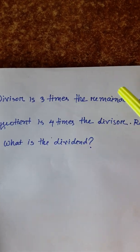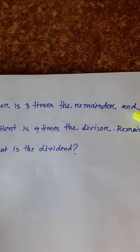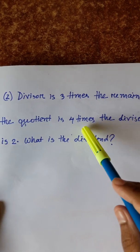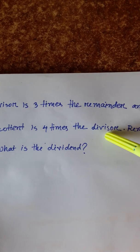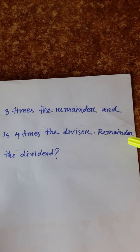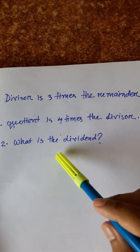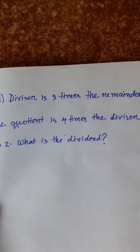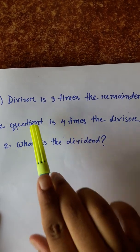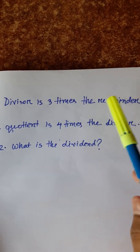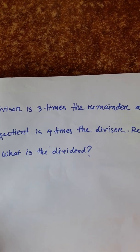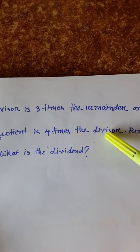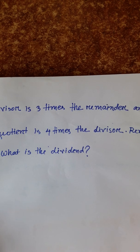Next question: Divisor is 3 times the remainder and the quotient is 4 times the divisor. Remainder is 2, then what is the dividend? Divisor is 3 times the remainder and quotient is 4 times the divisor.